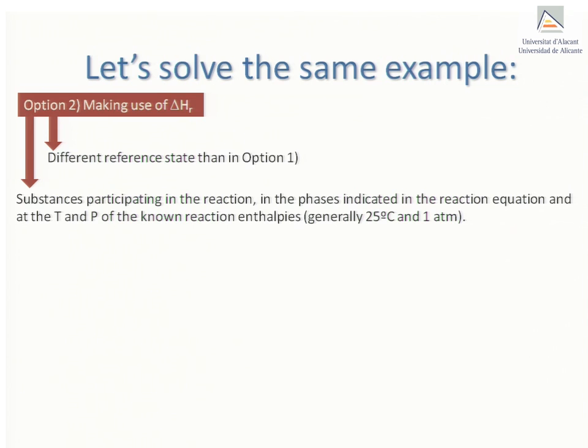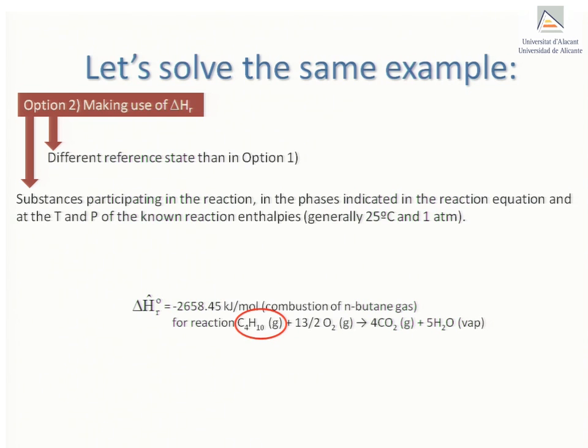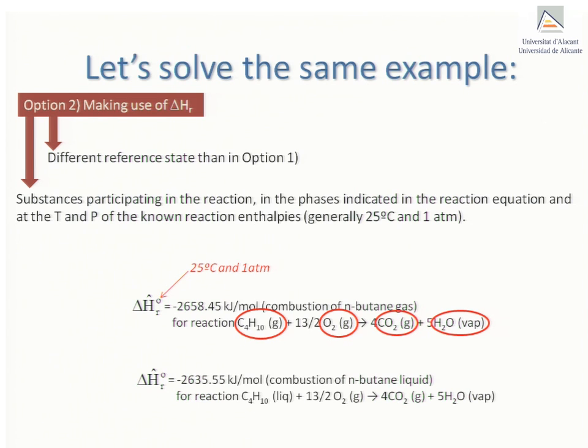Were we to use the reaction enthalpy for the combustion of n-butane with water produced in the vapor phase the reference state would be butane gas, oxygen gas, carbon dioxide gas and water vapor at 25 degrees Celsius and 1 atmosphere. On the other hand if we use the reaction enthalpy of n-butane in the liquid phase and obtained water in the vapor phase the reference state would now be butane liquid, oxygen gas, carbon dioxide gas and water vapor at 25 degrees C and 1 atmosphere.